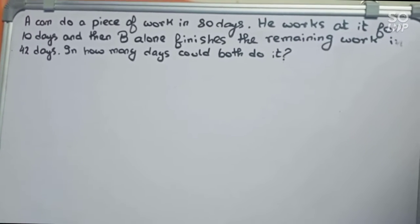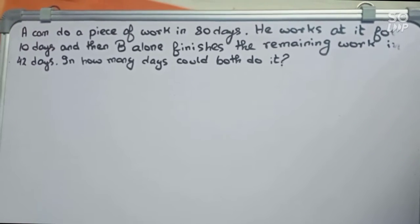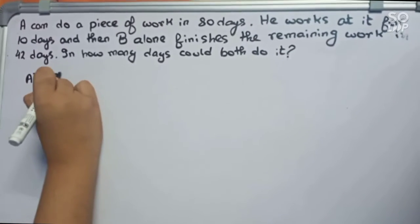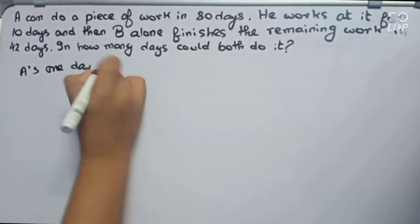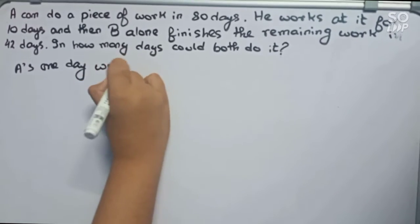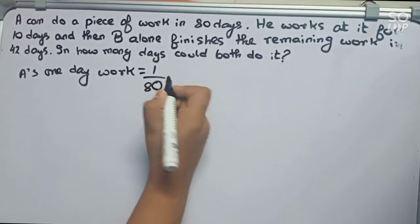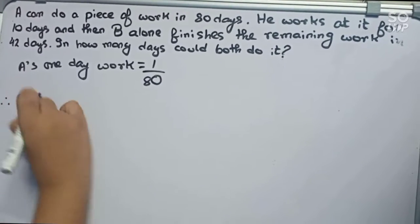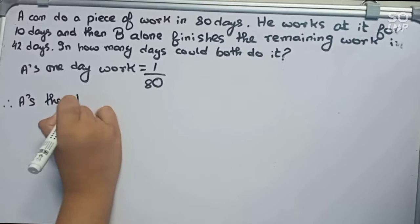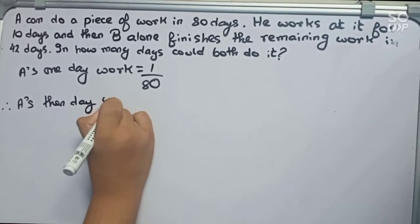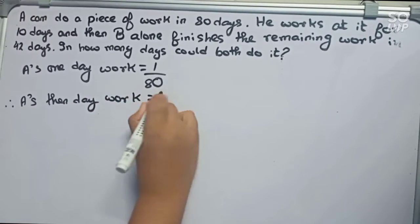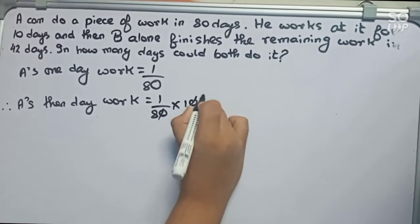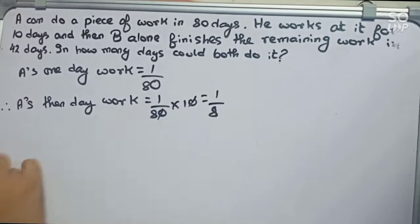So let's start. First, A's one day work = 1/80. Now therefore A's 10 day work = 1/80 × 10. Cut the zeros, it will become 1/8. And I have to find the remaining work.